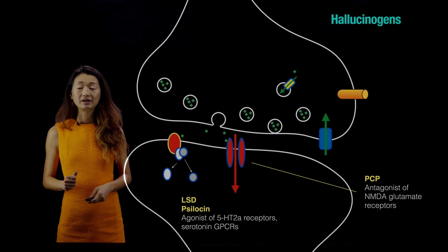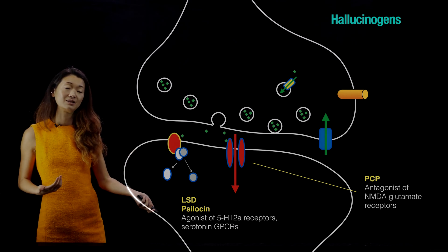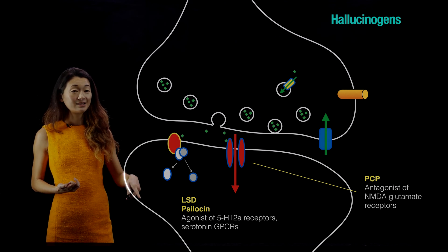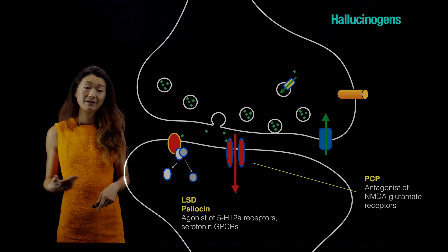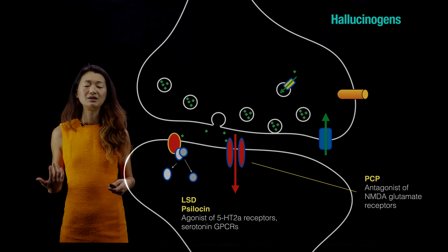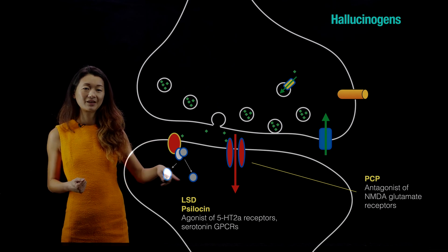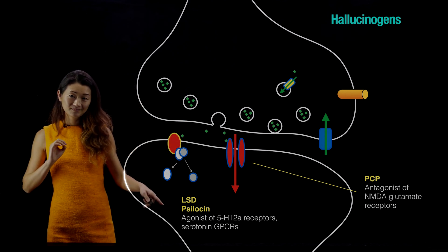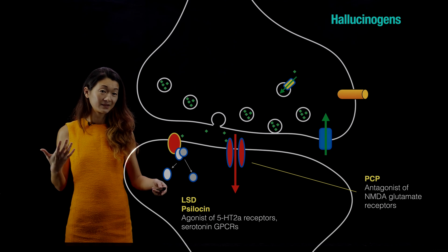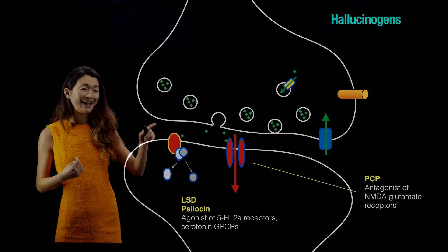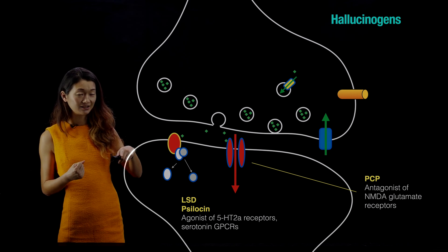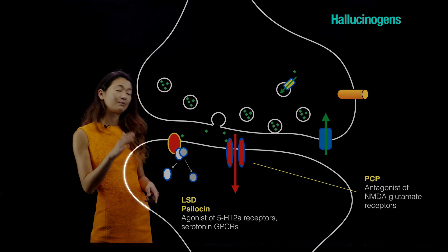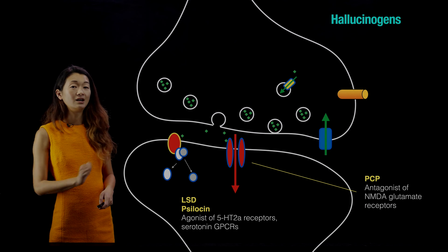The serotonin system is the target of hallucinogens, including PCP, LSD, and psilocybin. PCP is an antagonist of the NMDA glutamate receptors of the serotonergic system. LSD and psilocybin instead target the metabotropic 5-HT receptors — 5-HT being another way of saying serotonin — acting as agonists. Serotonin receptors cause feelings of pleasure and connection, so LSD and psilocybin activate those same serotonin receptors, mimicking the action of serotonin. These are examples of two different types of hallucinogens targeting both the metabotropic and ionotropic receptors of the serotonin system.